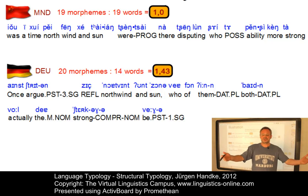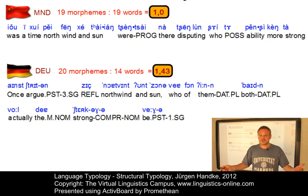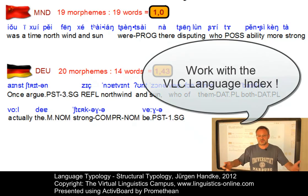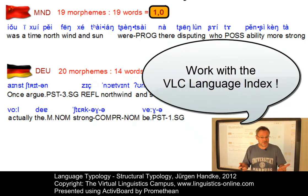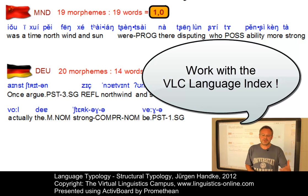Here is a suggestion: look at the Language Index on the Virtual Linguistics Campus, load a language, load the story 'The North Wind and the Sun,' and calculate the degree of synthesis of that language.